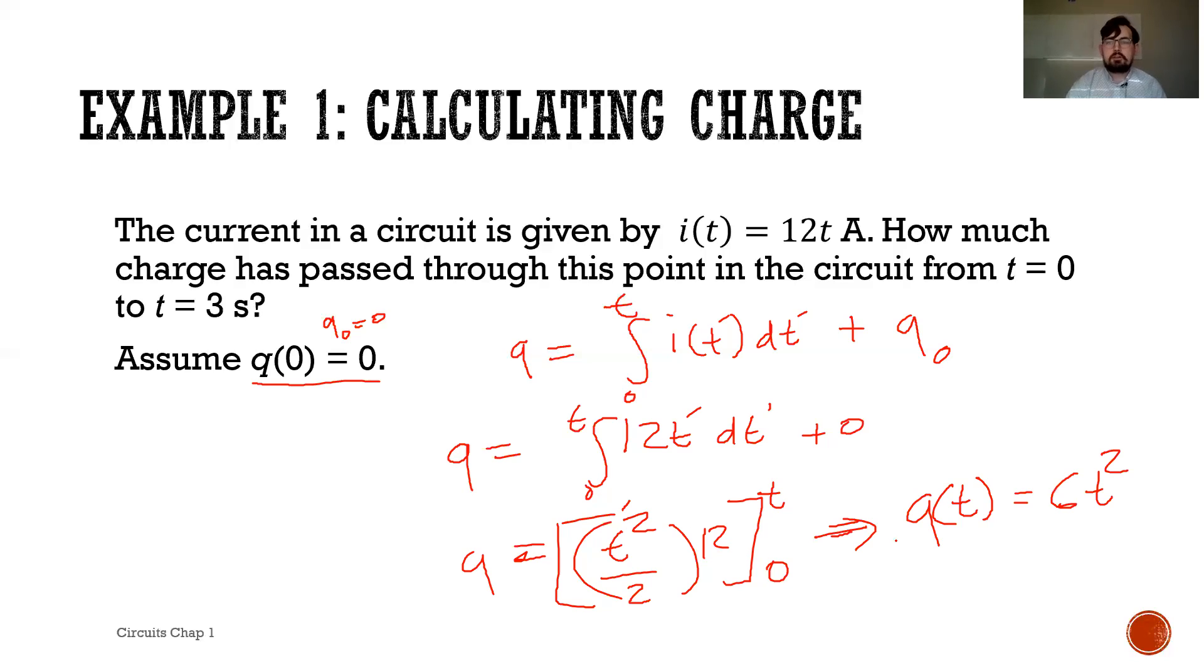We're saying how much charge has passed through. This is the charge that has passed through the circuit in 3 seconds. So we're saying what is this charge at 3 seconds? Well, that's just going to look like 6 times 3 squared or 54.